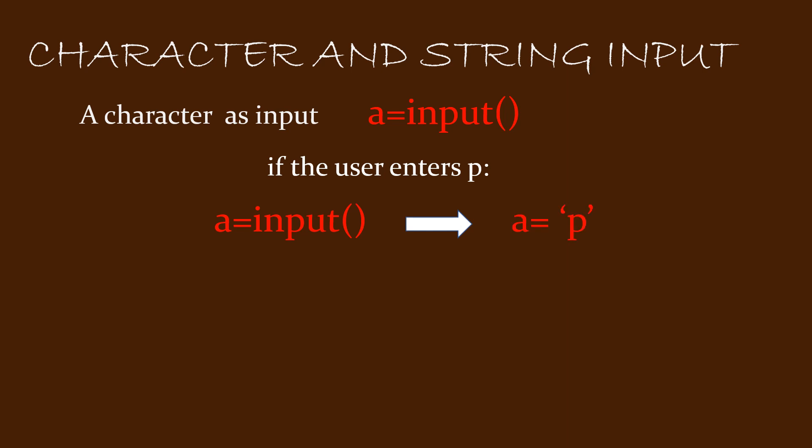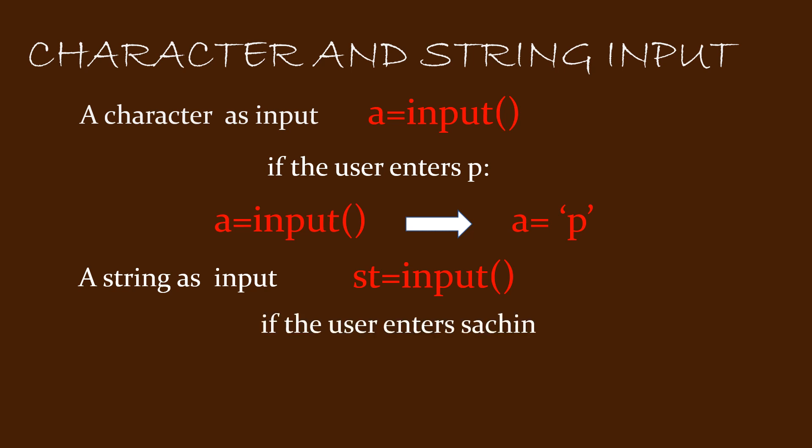To enter a string as an input, we use st equal to input open close bracket. A string is anything written within single quote, double quote, or triple quotes — it is a collection of characters. So if the user enters such in, the variable st will contain such in, meaning st equal to input open close bracket with input as such in means st equals such in.